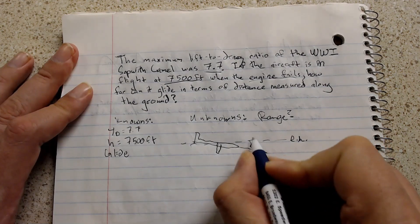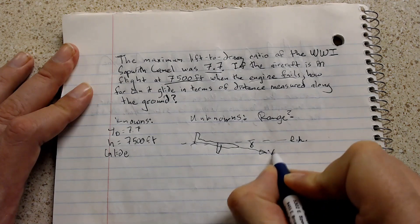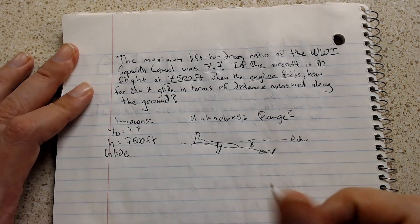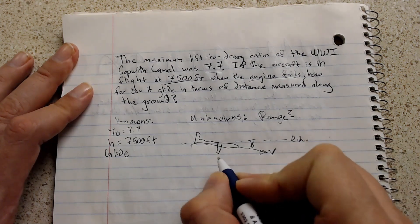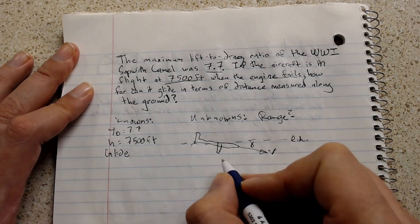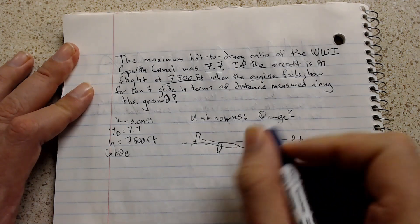So the flight path angle is going to be below the local horizon. So this is the actual travel path of the aircraft. And if we look at it, it's going to have three of the four forces acting on it. It's not going to have any thrust because the engines are off.